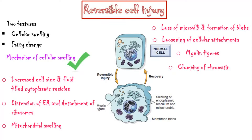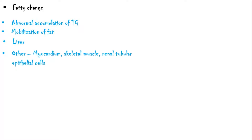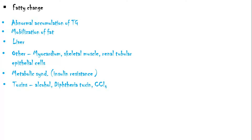Fatty change occurs due to abnormal accumulation of triglycerides inside the cell, caused by mobilization of fat from fat stores. It commonly occurs in the liver, but also affects the myocardium, skeletal muscles, and renal tubular epithelial cells. These alterations in fat metabolism are commonly seen in patients with metabolic syndrome. Other causes include toxins like alcohol, diphtheria toxin, carbon tetrachloride, and ischemia.